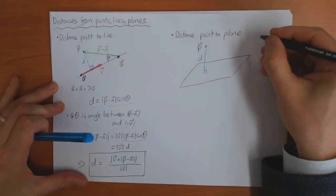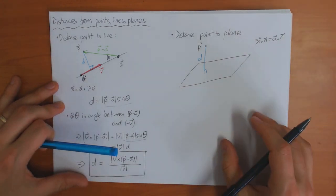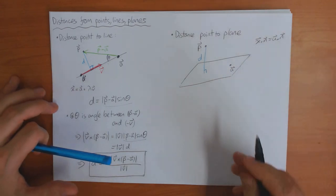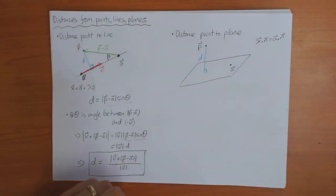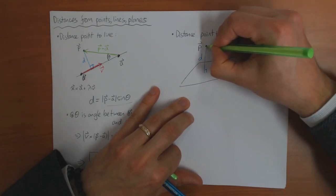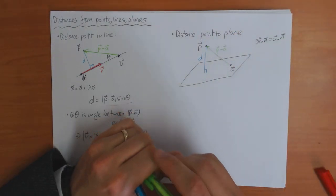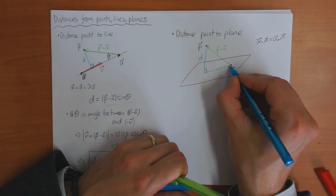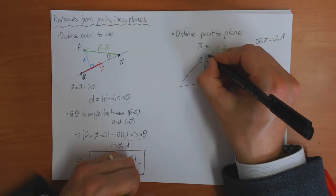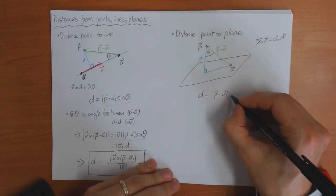I'm going to assume you've got the equation of the plane in the form x · n = a · n — in other words, that you know the normal to the plane. We also have a point on the plane A, and just as before, P − A is the vector from A to P. We've constructed a nice right-angle triangle, and if I define theta as the angle at A, then D = |P − A| · cos θ.